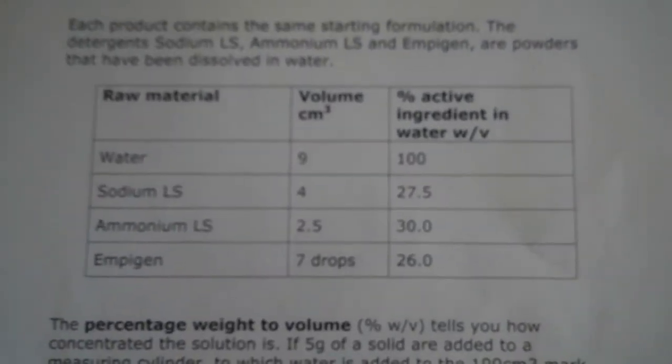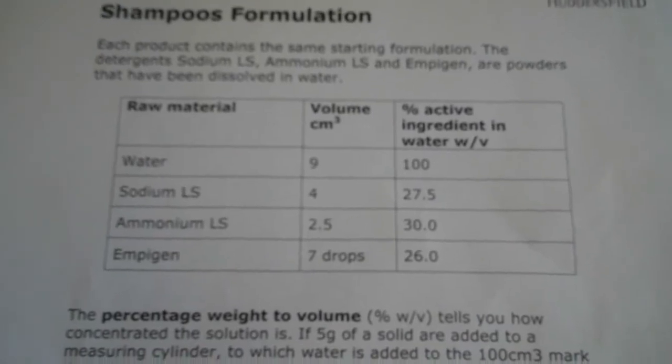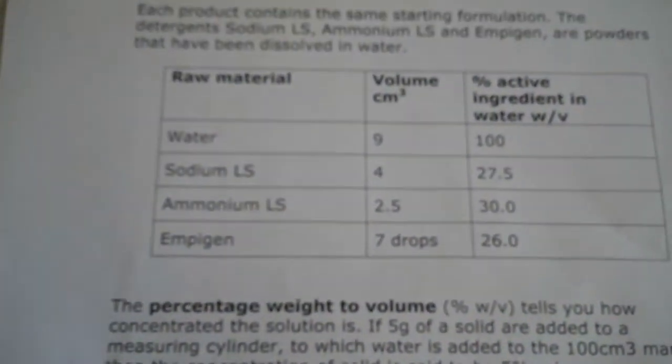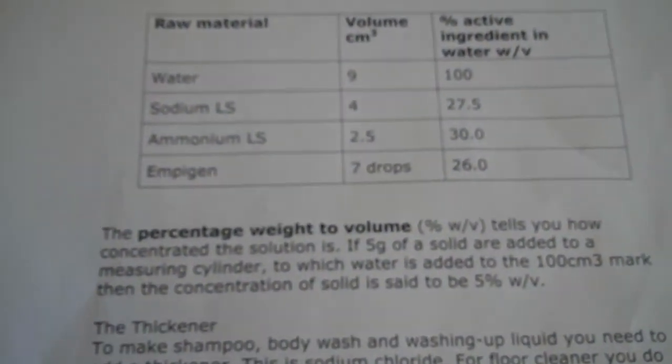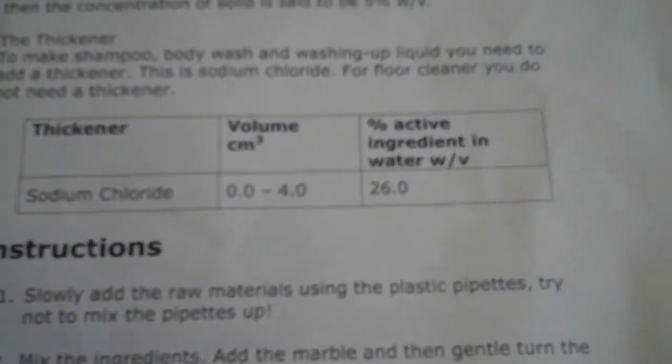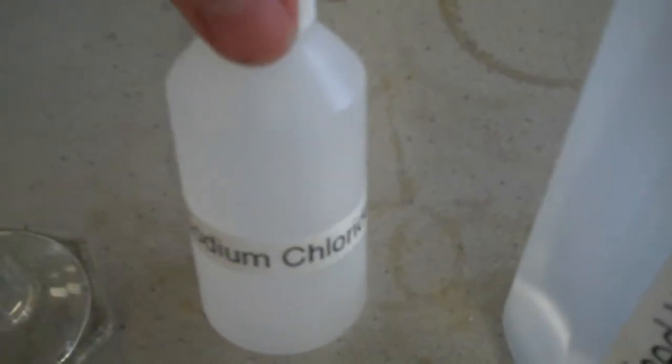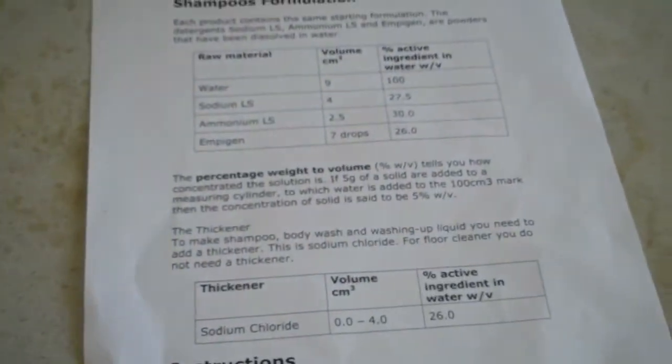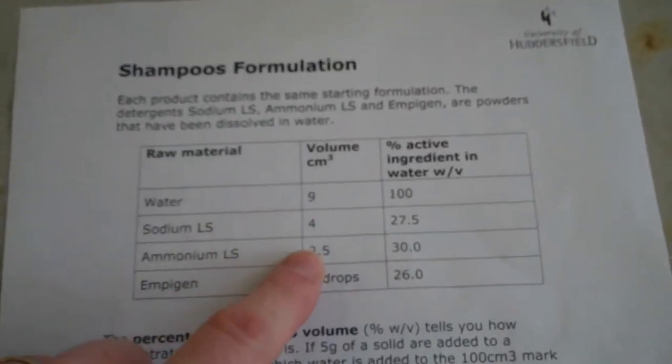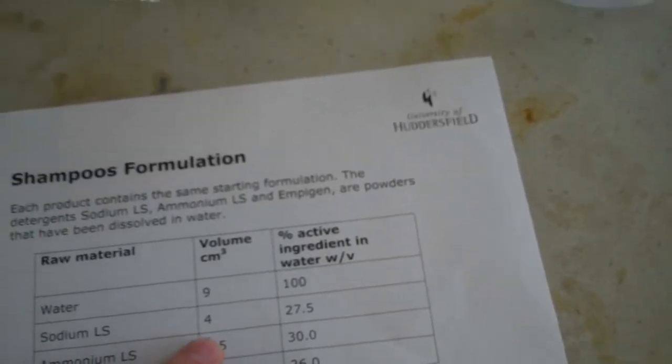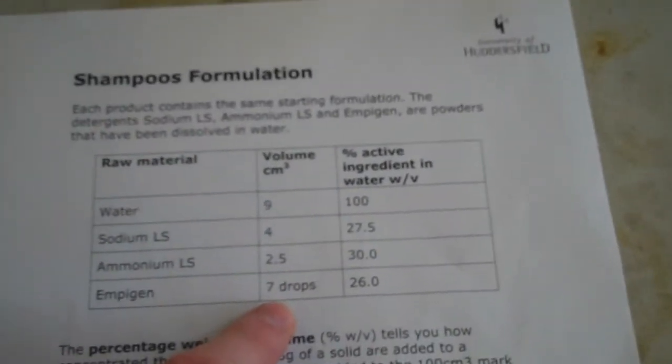If you look at those instructions, the first thing it says is you need some water. You need some what's called sodium LS, so that's this bottle here. Then it says you'll need ammonium LS, which is next to it. And you'll need some empygen, which is here. The other ingredient you'll need is sodium chloride, which is a solution in this bottle here. It says use nine centimeters cubed of water, four centimeters cubed of sodium LS, two and a half of ammonium LS, and seven drops of empygen.